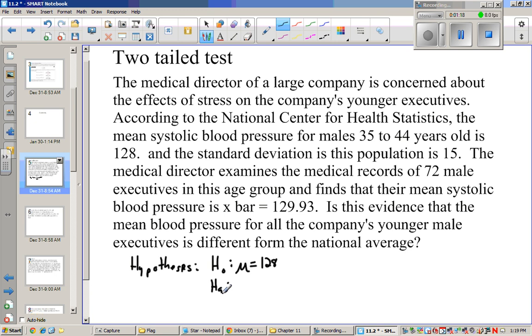Now, our alternative hypothesis is, they're asking is this evidence that the mean blood pressure for the company's younger males is different? They didn't say greater than, they didn't say less than, they said different. So our alternative hypothesis is that μ is not equal to 128.